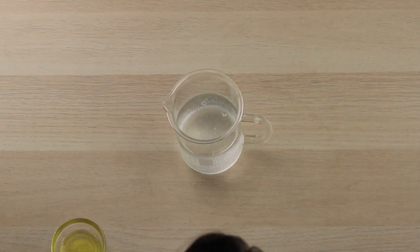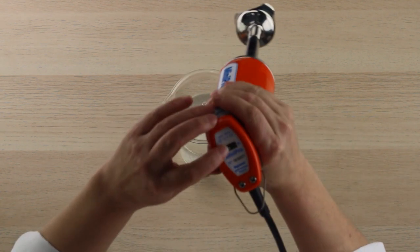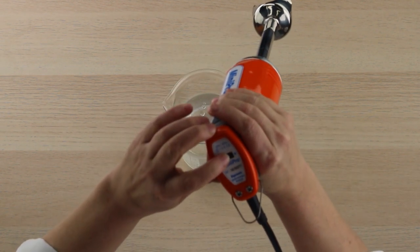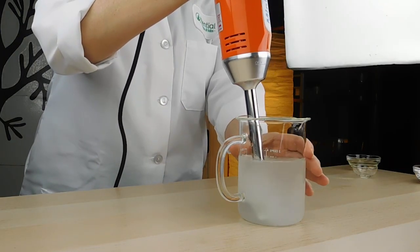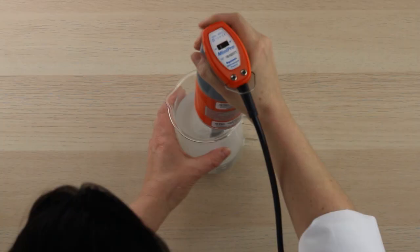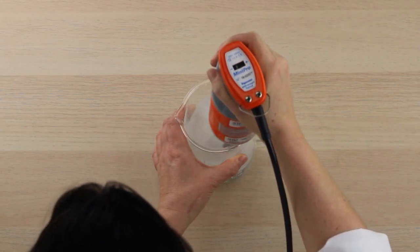And now we're just going to take our mixer and mix those together. You want to make sure your mixer is not too high so you don't splash it out of your container. So we're just going to make sure that those are fully blended.